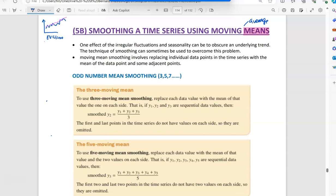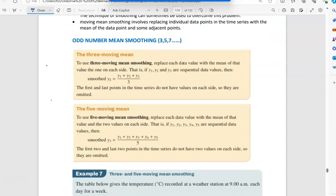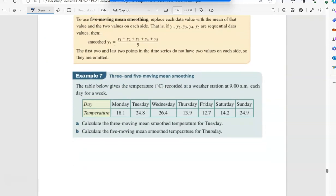So the very first smoothing technique we're going to do today is mean smoothing. The smoothing techniques have very similar names, so you need to be very sure of which one you're doing. Let's have a look. First, we're going to look at odd numbers mean smoothing, which means either three, five, seven, nine, and so on. If you have three mean smoothing, you get your three data values, add them up and divide by three. If you have five, you get the five and add them up, and so on.